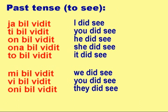Past tense — To see: YA BIL VIDIT, TI BIL VIDIT, ON BIL VIDIT, ONA BIL VIDIT, TO BIL VIDIT, MI BIL VIDIT, VI BIL VIDIT, ONI BIL VIDIT.